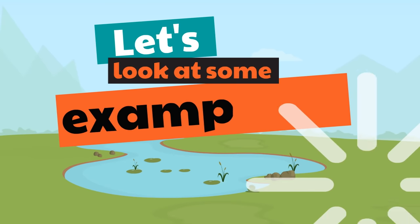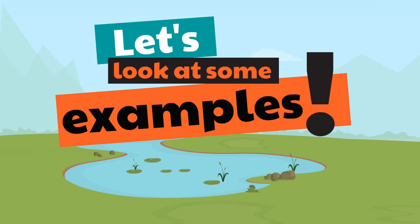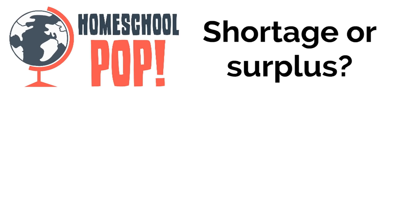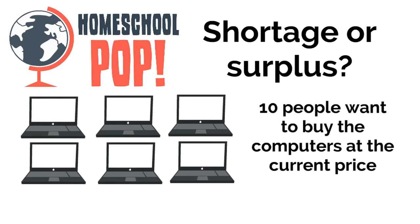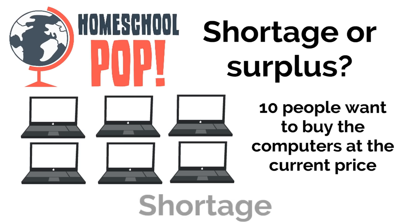Let's look at some examples. We're going to look at some situations and decide: is this a shortage or a surplus? You can help us out. Let's say a store has six computers that they want to sell, and there are ten people who want to buy the computers at the current price. So six computers and ten people willing to buy at the current price — is there a shortage or surplus? Yeah, a shortage. There are not enough computers to sell to everyone who's willing to buy them at the current price. They need to make sure they have more computers so there's no longer a shortage.